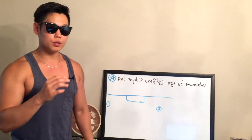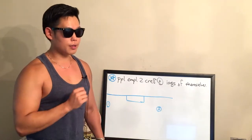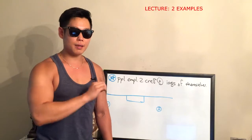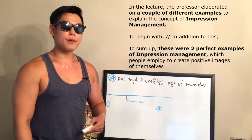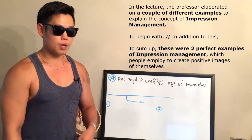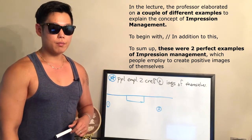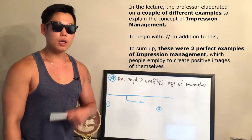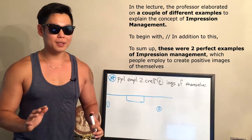Now that we're done with the reading passage, we should be able to say everything I'm about to say without any difficulty. Let's pretend the professor gave us two examples. Here is the sample response without the lecture-specific information filled in: 'In the lecture, the professor elaborated on a couple of different examples to explain the concept of impression management. To begin with... In addition to this... To sum up, these were two perfect examples of impression management, which people employed to create positive images of themselves, given by the professor in the lecture.'